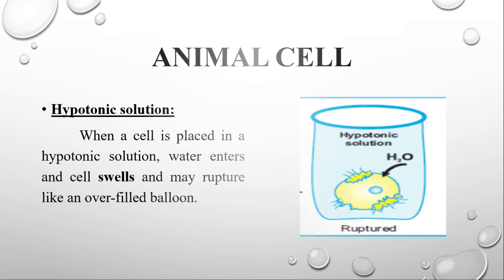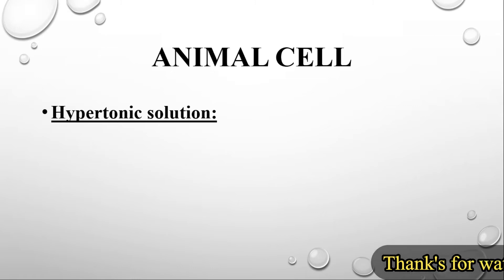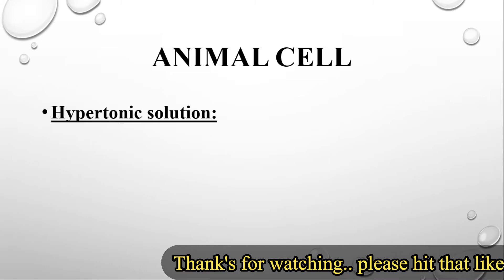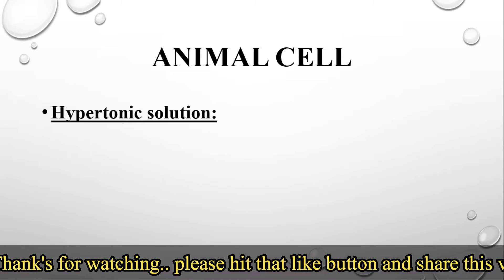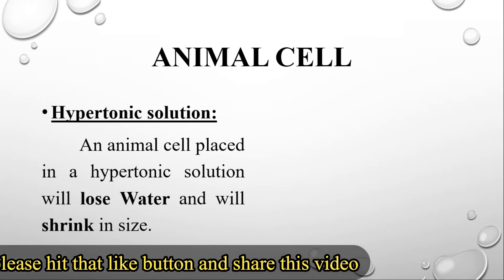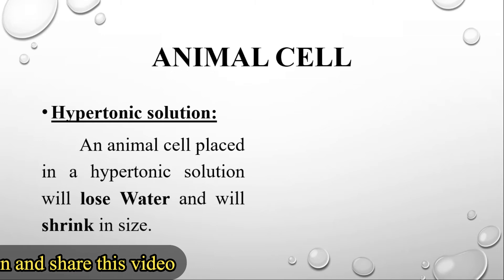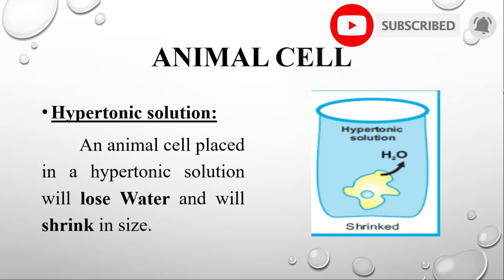The next condition for the animal cell is hypertonic solution. Hyper means the outside concentration is more and the inside concentration is less. So water always moves from lower to higher concentration, meaning water will go out of the cell. An animal cell placed in a hypertonic solution will lose water and shrink in size.